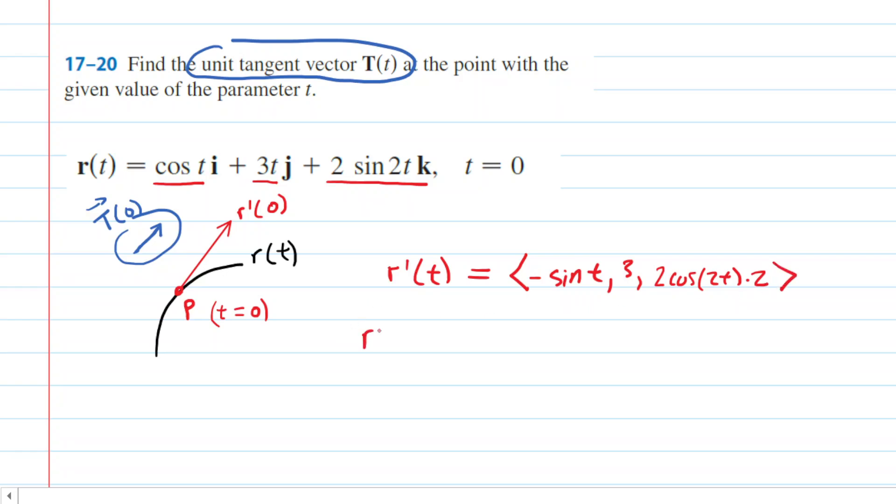Now, we can go ahead and plug in 0 for our lowercase t, our parameter. So, we would have the negative sine of 0. 3 is a constant here. We have 2 times the cosine of 0 times 2. Of course, for the x component, the sine of 0 is 0. So, negative 0 is 0. The y component is 3. Cosine of 0 is 1. 2 times 1 times 2 is 4. So, that is our tangent vector.